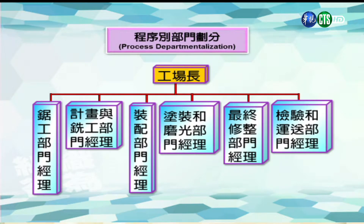下一张图是程序部门，所谓程序部门的划分是按照生产流程的程序来划分，比如说可能是计划部、装配部、涂装与磨光部、最终修整部门，以及检验部门，是按照整个生产的流程来划分部门。